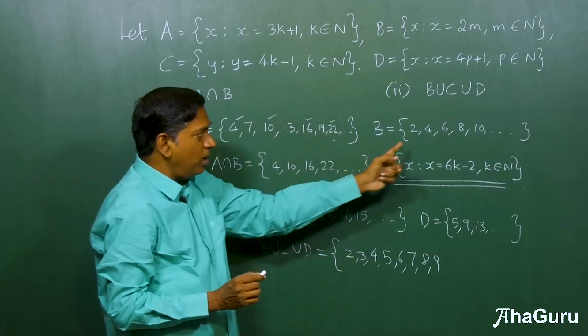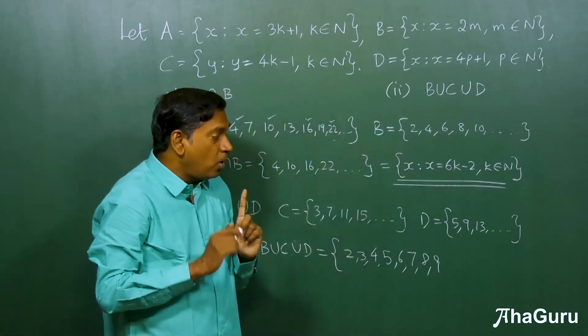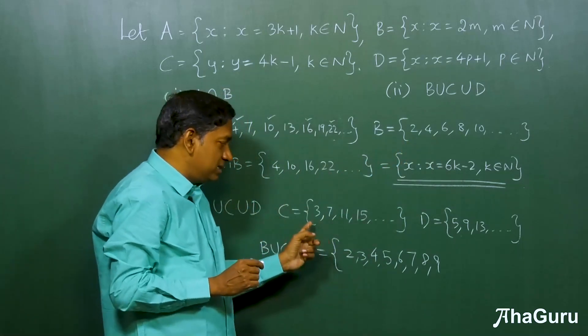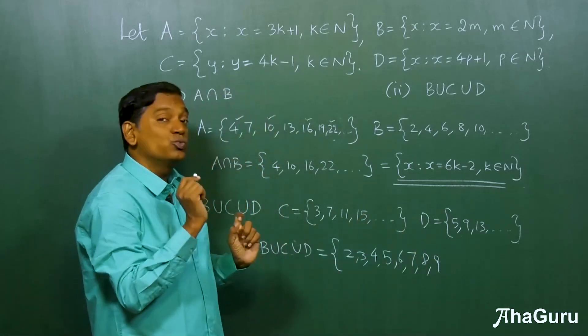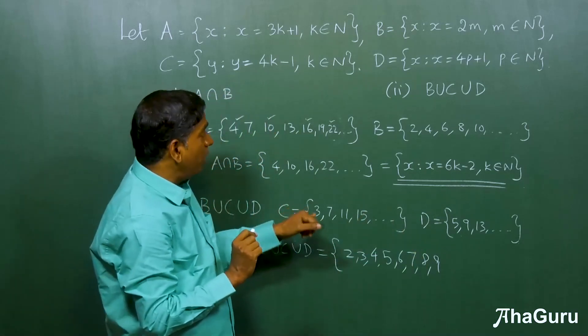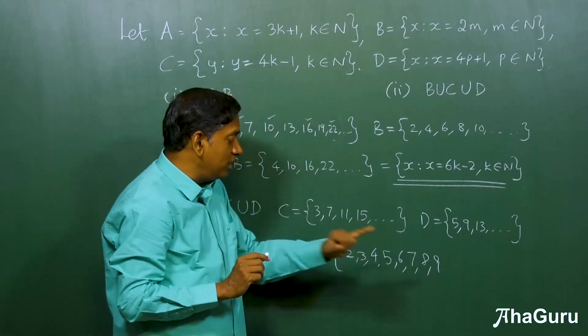See, what you can see is that, all even numbers are here. All odd numbers are either in C or in D, except for one odd number, which is 1. Except for one, all the other odd numbers are here.